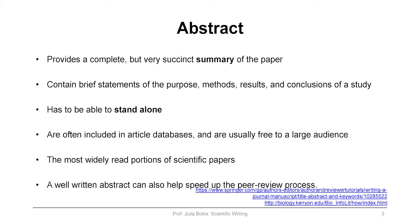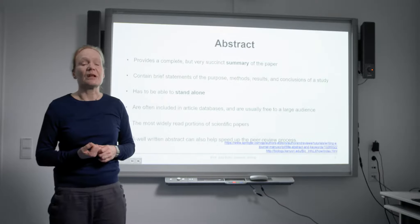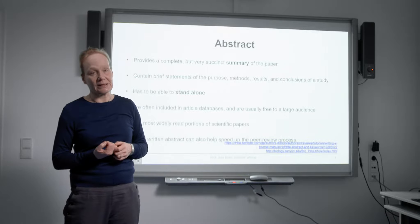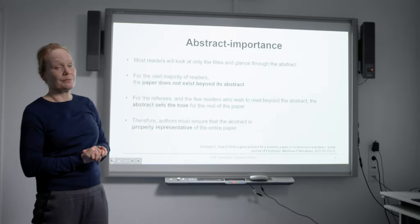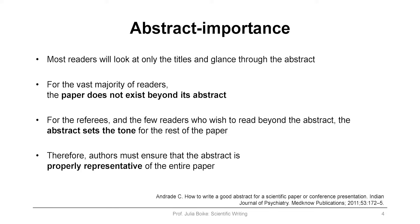The abstract is one of the most widely read portions of scientific papers, and a well-written abstract can also speed up the peer review process. If you have a nice abstract, the editor and reviewer will like it and will most likely continue the editorial process. Most readers will only look at the title and glance at the abstract. For the vast majority of readers, the paper does not exist beyond its abstract — meaning if your abstract is not interesting, people will not read into the details of your paper. For referees and the few readers who wish to read beyond the abstract, the abstract sets the tone for the rest of the paper. If you have a nice abstract, the reader is already in a well-toned mood, whereas when the abstract is poor, as an editor I already get upset.